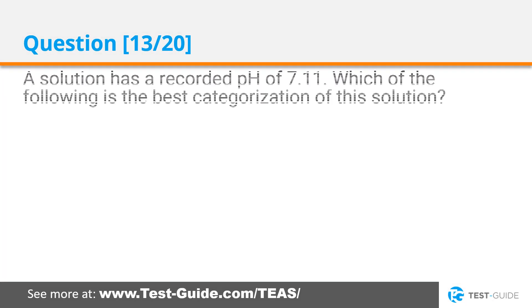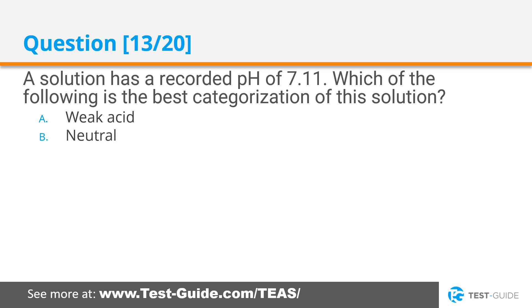Question 13. A solution has a recorded pH of 7.11. Which of the following is the best categorization of this solution? Weak acid, neutral, weak base, strong base.